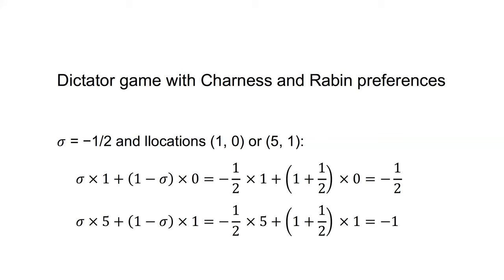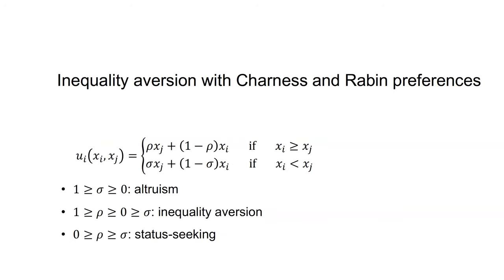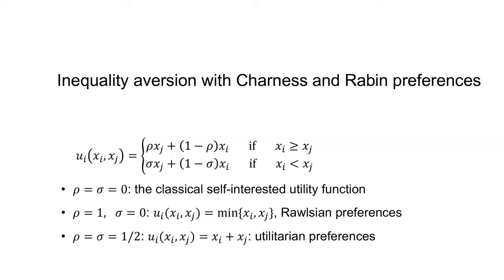Sigma being less than zero can also account for the rejection of low offers in the ultimatum game. The Charnas and Rabin model can capture many forms of distributional preferences: if sigma lies between one and zero, the agent is altruistic; if 1 ≥ rho ≥ 0 ≥ sigma, the agent is inequality averse; if 0 ≥ rho ≥ sigma, the agent is status-seeking — they gain more utility by having more than the other player. If sigma equals rho equals zero, we are left with the classical self-interested utility function where the agent only cares about their own payoff.